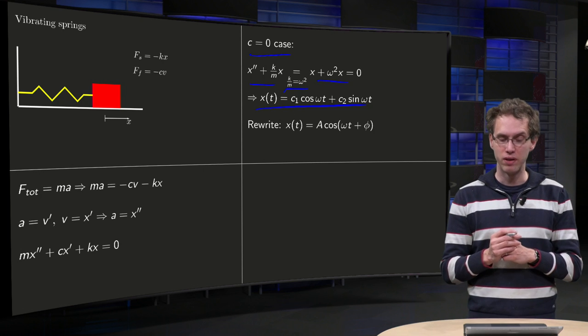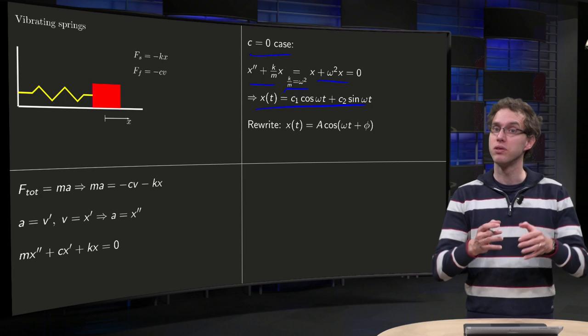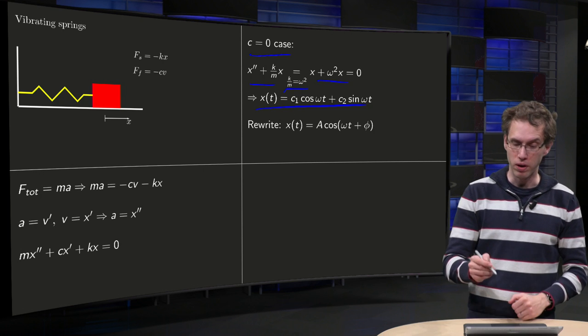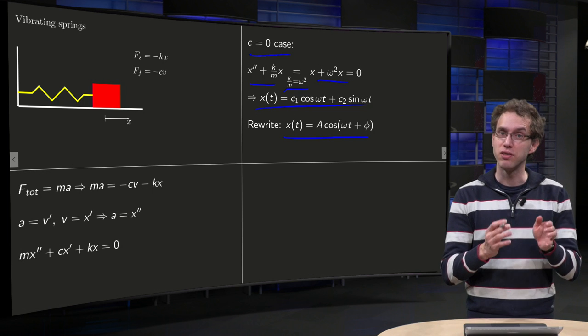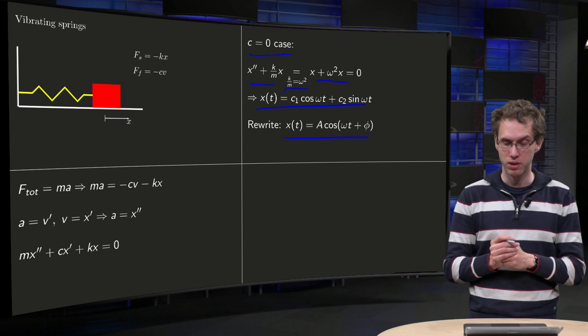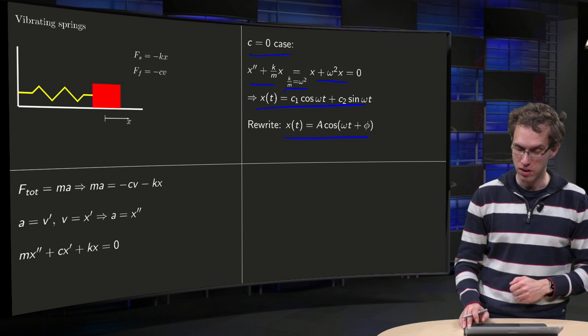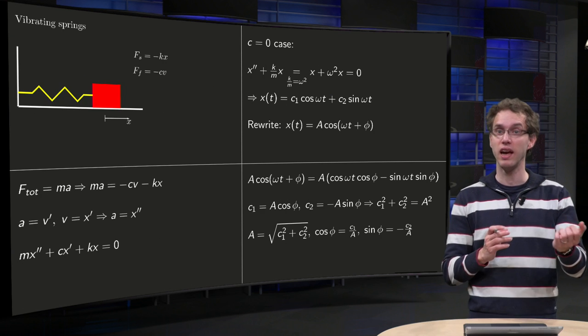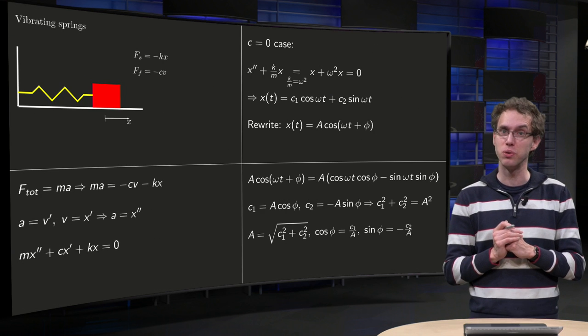x equals c one times the cosine of omega t plus c two times the sine of omega t. We can even rewrite this a bit to get one cosine, so then we get x of t is some amplitude A times cosine of omega t plus phi. So how do we do that, how do we find A and phi in terms of c one and c two and why?